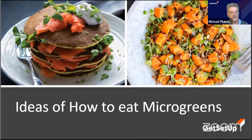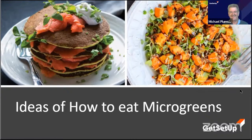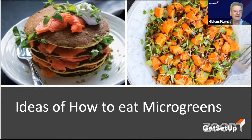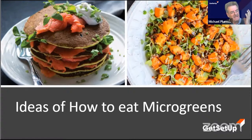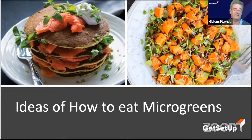Here we have some beautiful dish examples. You can see savory pancakes sprinkled with pea shoots — pea leaf microgreens adding just a slight sweetness. You can really load your microgreens onto dishes like this.